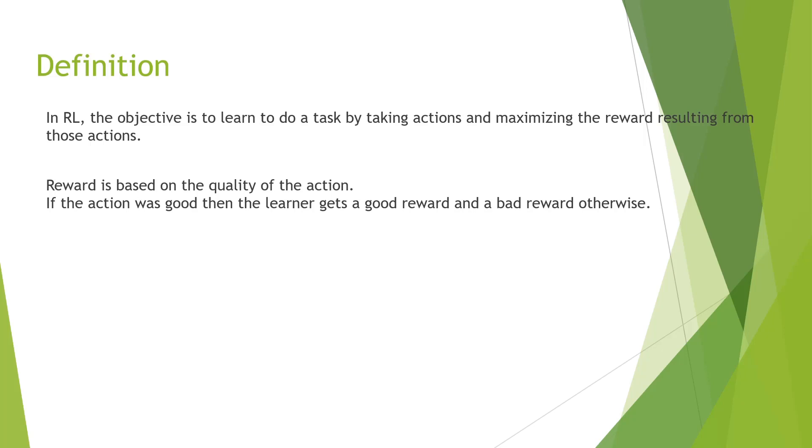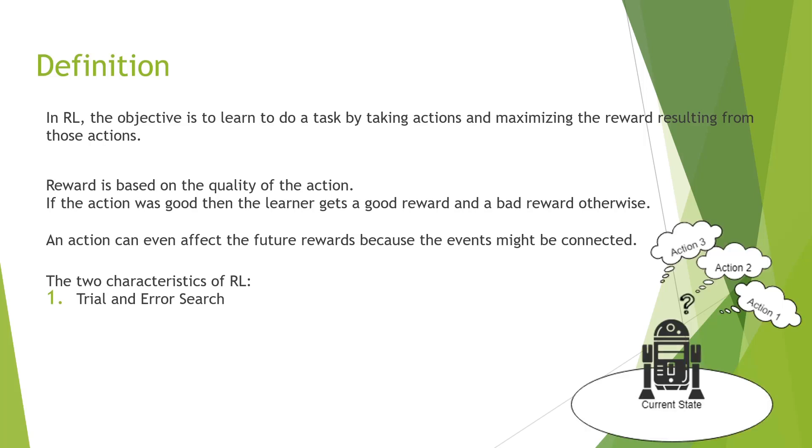One can intuitively think that an action can also affect the future as the events might be connected. This shows us two characteristics of reinforcement learning algorithms. The first one is a trial and error search. The agent tries different actions in a given state and finds out the best action in that state. The other characteristic is delayed rewards.